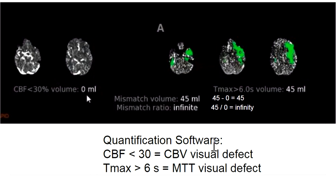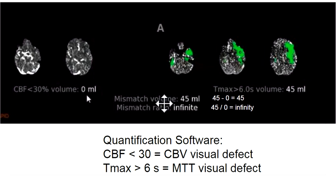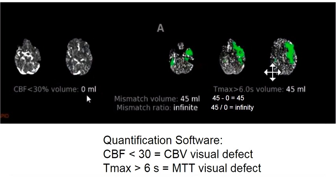You can do quantitative analysis: look at the CBF defect — in this case zero ml — then stack up all slices for the Tmax defect, which comes to 45 ml. The mismatched volume is 45 minus zero = 45 ml. That's a moderate-sized defect. The mismatch ratio is 45 divided by zero, which is infinity — meaning it's complete mismatch, all potentially reversible ischemia.